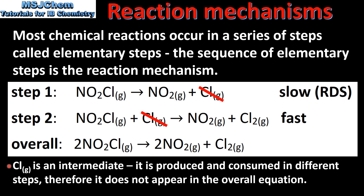The chlorine atom is an intermediate. It is produced and consumed in different steps, therefore it does not appear in the overall equation. After we cancel out the intermediates we are left with two NO2Cl's in the reactants and two NO2's and one Cl2 in the products, which matches the overall equation.